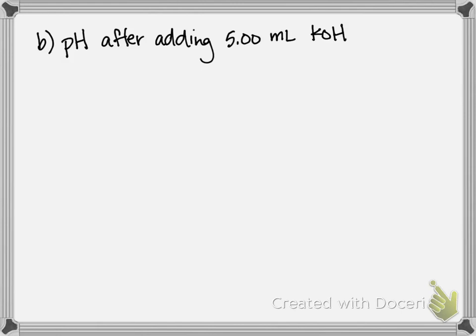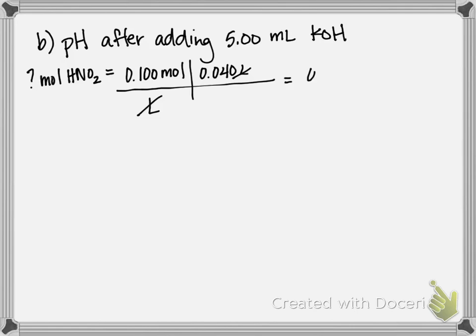So first I'm going to figure out the moles I have starting with of nitrous acid, and that's just the 40 milliliter sample of 0.1 molar nitrous acid. So I'm going to multiply my molarity times my volume. Liters will cancel, I'll be left in moles. Gives me 0.004 moles nitrous acid.